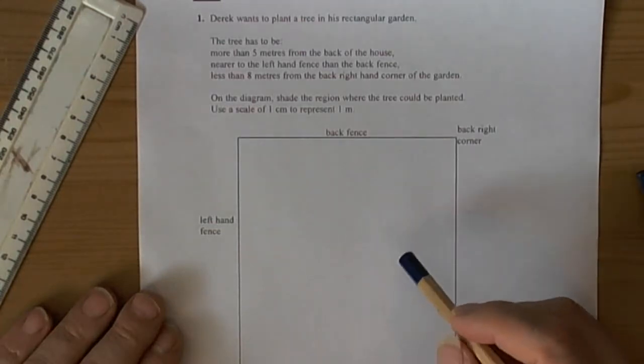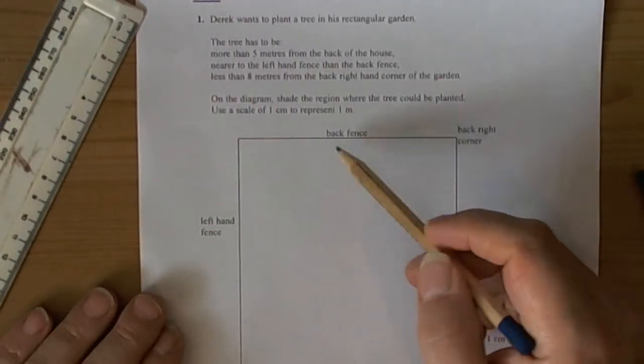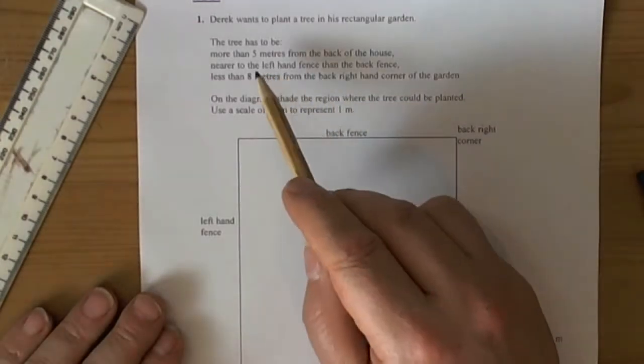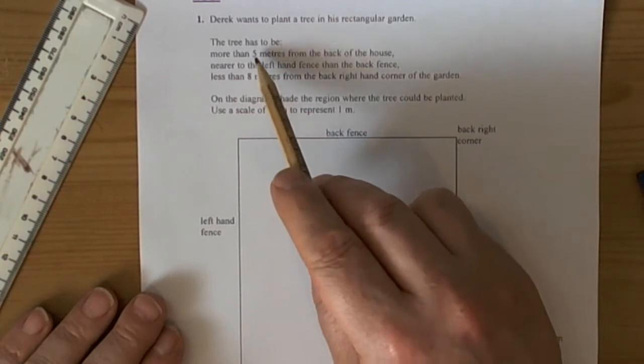This question is involving loci. We know this because it's about drawing and shading regions and it's mentioning conditions. So we look through the conditions.